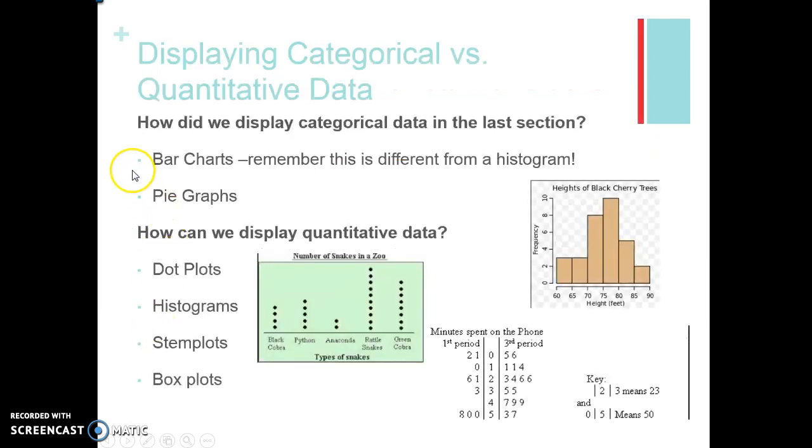Categorical data, remember we use bar charts. Remember how this is different from a histogram - the bars don't touch each other, there's a little bit of space in between. If there is a space in between it doesn't mean that's a value of zero, it just means there's an actual space. And we took a look at pie graphs. So those are our two major ways to display categorical data.